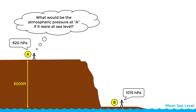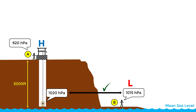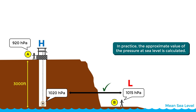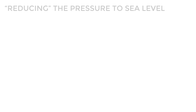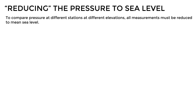The most accurate way would be to dig a deep hole and lower a barometer down to sea level and see what pressure is indicated. This way, since both pressure measurements are made at the same level, we can compare the two and determine the actual horizontal pressure variation. Obviously in practice we don't do this literally. Instead, the approximate value of the pressure at sea level is calculated for each station. This procedure is known as reducing the pressure to sea level, and as an international agreement, all measurements must be reduced to mean sea level.